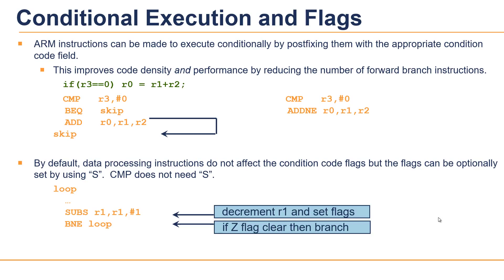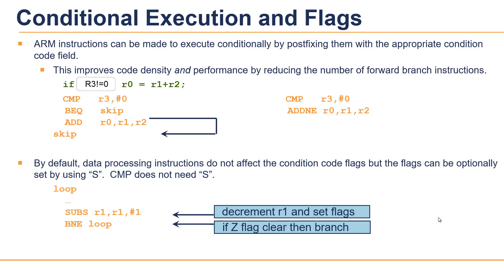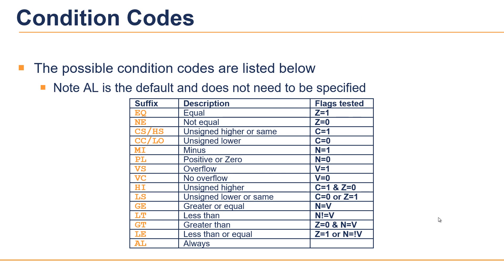ARM instructions support conditional execution, which improves code density. For example, when variable R3 is not equal to zero, add R1 and R2 and put the result in R0. In Thumb mode, this code takes six bytes to complete execution, whereas the equivalent ARM mode code takes only two instructions at four bytes each — totaling eight bytes. This shows that Thumb instructions have higher code density than ARM instructions. One more important aspect: by default, data processing instructions do not affect the condition code flags in the PSR, but flags can optionally be set by using the S suffix. CMP and TST instructions automatically update the status flags without needing the S suffix.